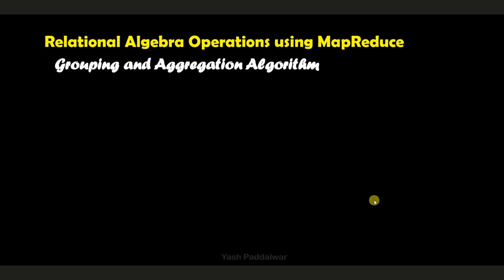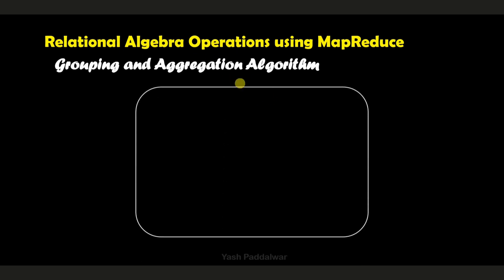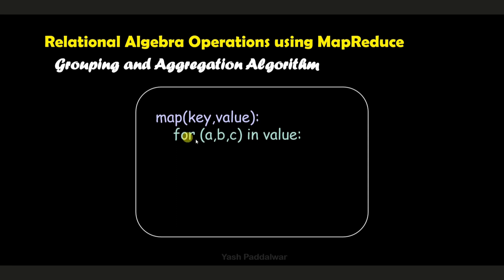So first let me explain what grouping and aggregation means. Grouping means to group certain attributes according to the specification of the client, and aggregation means to perform certain operations such as sum, min, max, average, and count. You can perform these operations on a set of attributes — that is called aggregation.